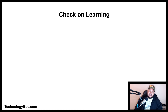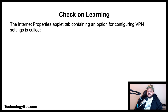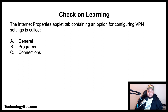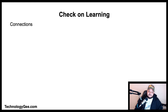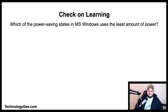Check on learning question one: The Internet Properties applet tab containing an option for configuring VPN settings is called what? Is it the General tab, the Programs tab, the Connections tab, or the Privacy tab? The correct answer is the Connections tab.